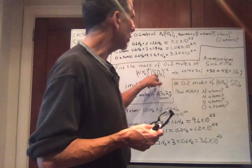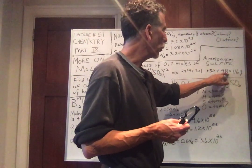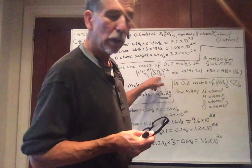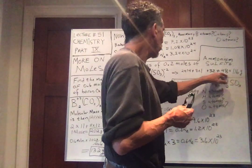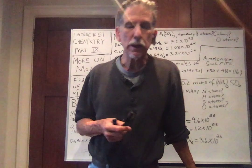And 3 oxygens. 3 times 16 is 48. Oxygen is 16. So we have 3 of those. We get 48. When I add these up, I get 116 grams.